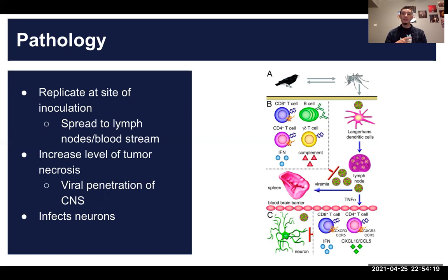Then the virus spreads further to the lymph nodes and into the bloodstream. Viral penetration of the central nervous system will cause an increased level of tumor necrosis, which increases permeability to the blood-brain barrier. West Nile virus directly infects neurons, but more specifically the gray matter of the brain, the brain stem, and the spinal cord.